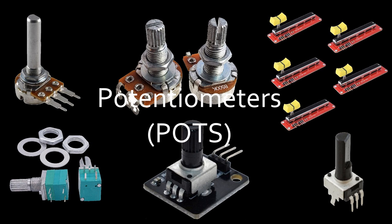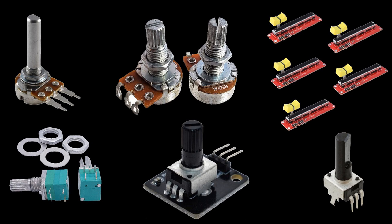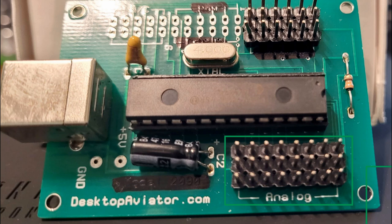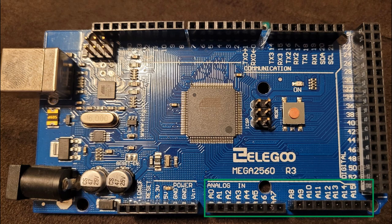Potentiometers, or POTs, are another essential component. They are used for volume, dimming and brightening displays, trim wheels, throttles, flaps, spoilers, and a lot more. They are one of the few components that will be wired up to the analog pins instead of the digital on your interface cards. The most common are rotary and slide potentiometers used in throttles.